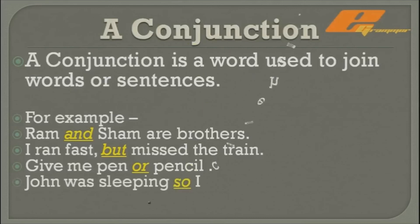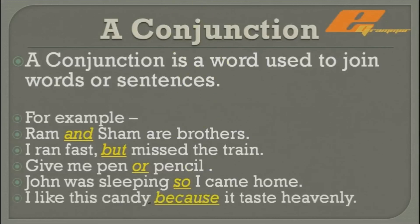More conjunction examples: 'John was sleeping, so I came home' — 'so' joins two separate sentences into one. 'I like this candy because it tastes heavenly' — 'because' joins the two sentences. These conjunctions — and, or, so, because — perform the activity of joining two sentences or two words into one.